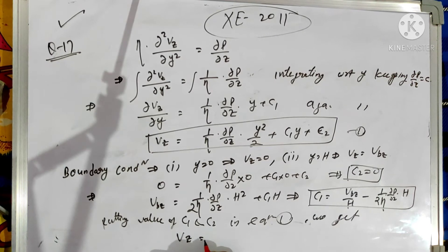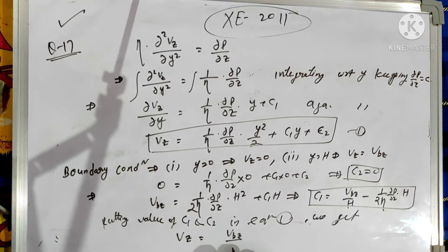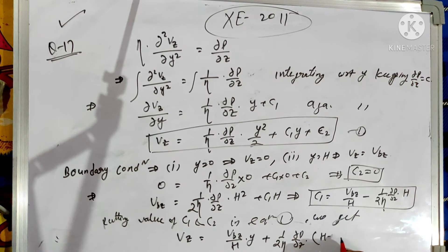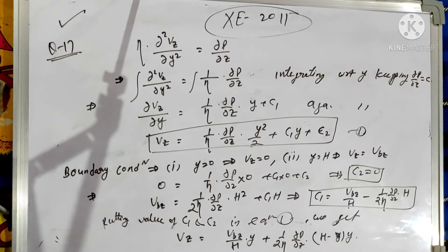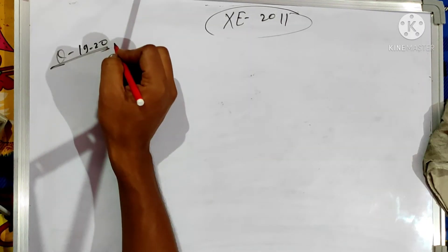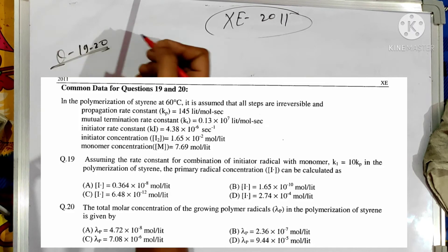Putting the values of C1 and C2 into equation 1, the velocity profile is: vz = (Vb/H) × y + (1/2η) × (∂P/∂z) × (H - y) × y. This is the answer.